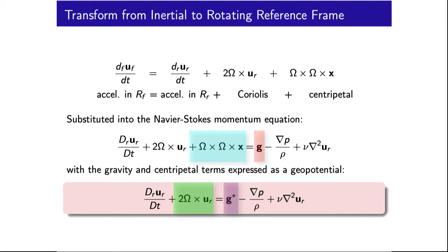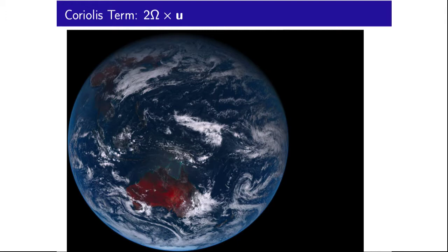The Coriolis term, 2 omega cross u, is the focus of our investigation here. To understand the Coriolis term, it is helpful to consider it with respect to the local rotating coordinate frame on Earth's surface. Here is Earth as viewed from Himawari 8, a geostationary satellite looking at Australia.